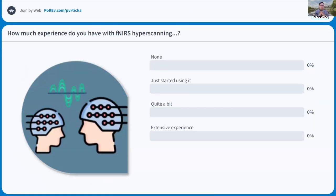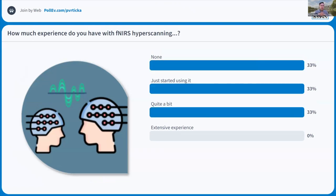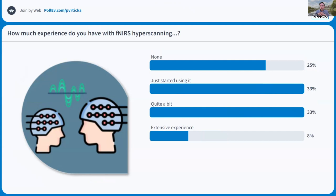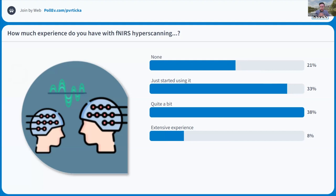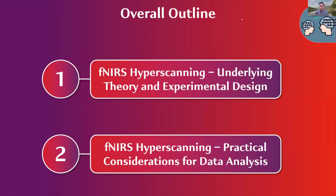Just for us to gauge how much experience you actually have with fNIRS hyperscanning, so the content provided today will be helpful for as many of you as possible. The distribution is quite nice — there are people who have not used it before, and some who have used it for quite a while. Hopefully the things I'll be talking about today will be relevant for as many of you as possible. My mouse is back, which is cool.